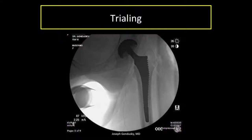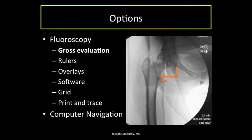I'll now go over different trialing options and then talk about my sequence and overlay. With fluoroscopy alone we can grossly compare sides. The relative distance of the femur from the lateral ischium gives a very good gross indicator of offset, and the distal distance to the lesser trochanter gives a reasonable estimate of length, but this method is not accurate enough.